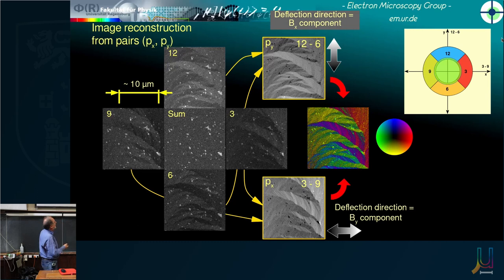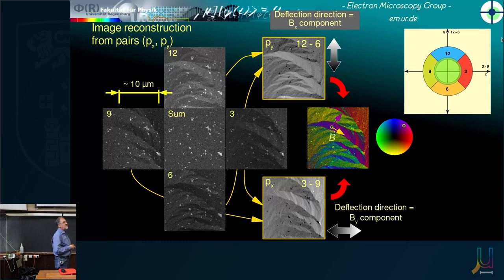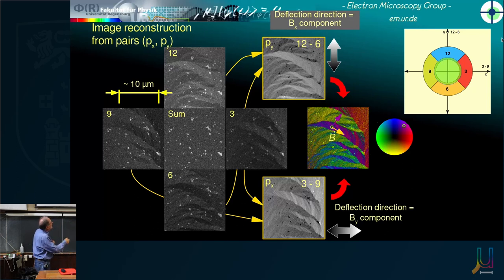To interpret the color map: select an area, find that color in the color wheel, draw a vector from the origin, and bring it back to where the color originated. Because the specimen is magnetic, the force is at right angles to the magnetic induction, so you can determine the induction direction. Greater color saturation means a longer vector — stronger deflection. We are now able to interpret the images in terms of direction and strength of deflection.